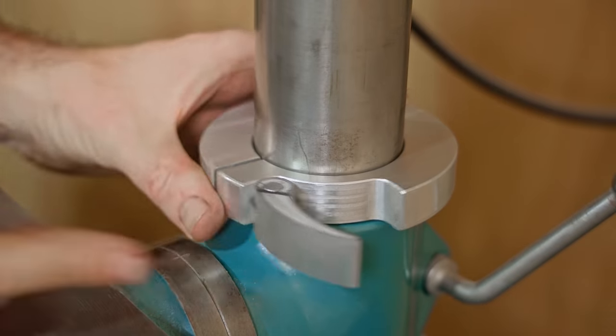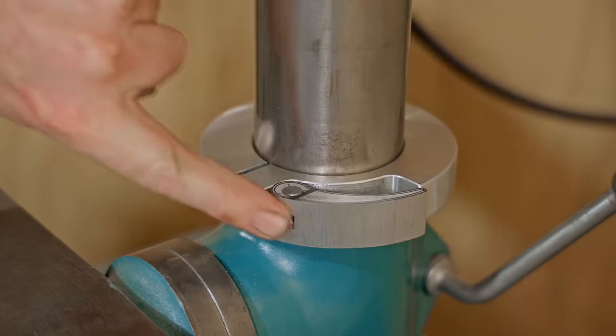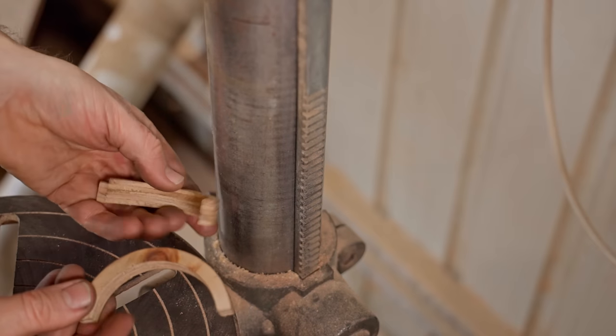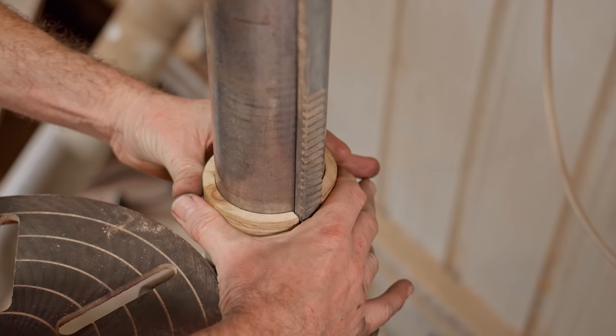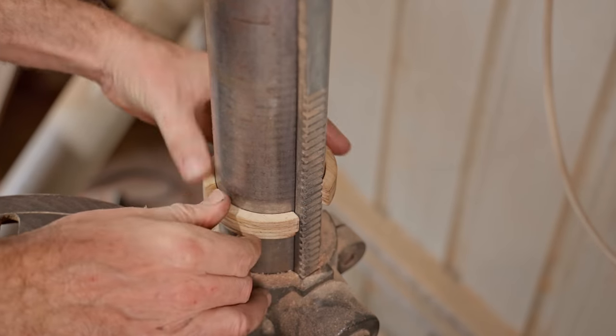That works an absolute treat. I'll finish the cam lever later on. I'll just mention that if the column has a height adjustment rack, then a separate ring could be made to go inside the main ring. It will be a bit more work, but I reckon it would be doable.